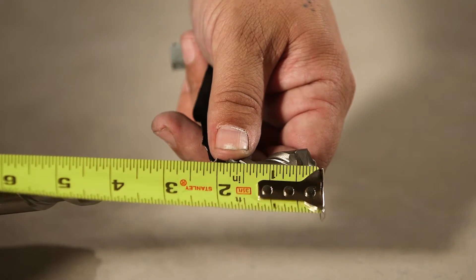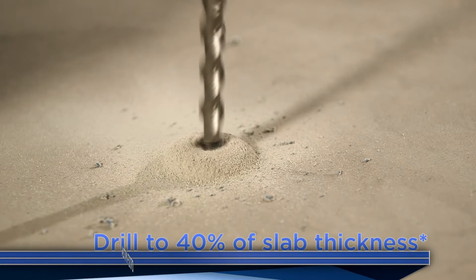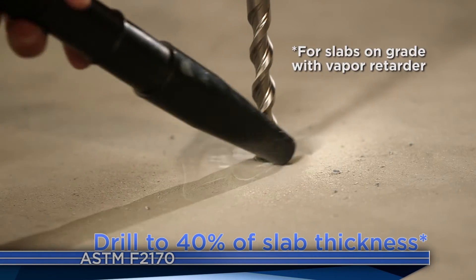We begin by drilling a hole in the concrete to a depth of 40% of the slab thickness, according to ASTM F2170, and vacuum out any debris.